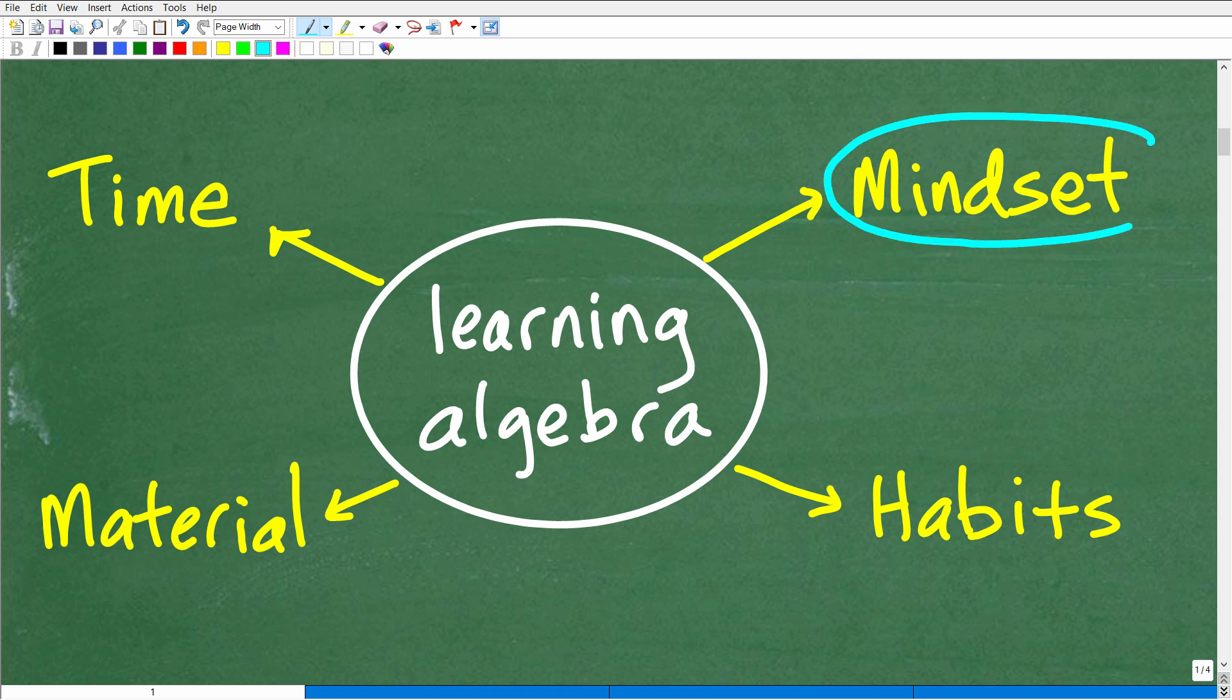So the first thing, if you are learning algebra later in life—suppose you've been away from school for 30 years or 20 years, you're just like I've got to go back to college, I've got to get ready for math, I've got to take an algebra course. So what's the first thing you want to do? Well, you need to check in with your mindset.